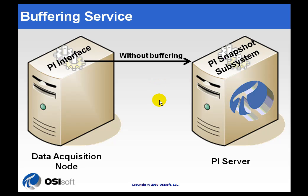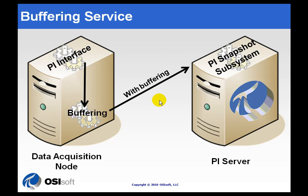If buffering is turned on, what you have instead is a little application — the Buffering Subsystem or the Buffserve — that acts as a kind of go-between between the interface and the PI Server. The Buffering Subsystem has to be started before the interface so that it can do this kind of impersonation.